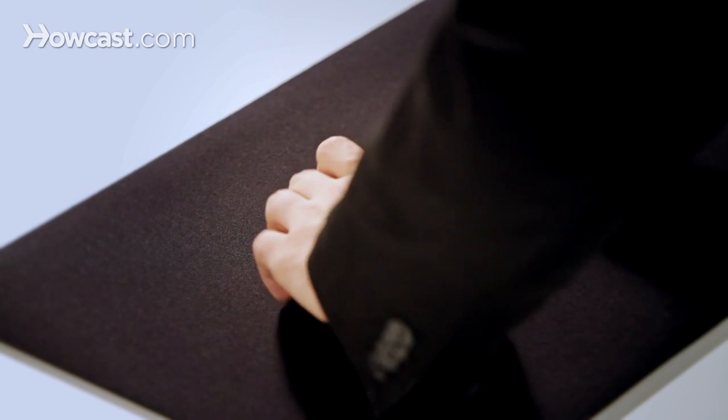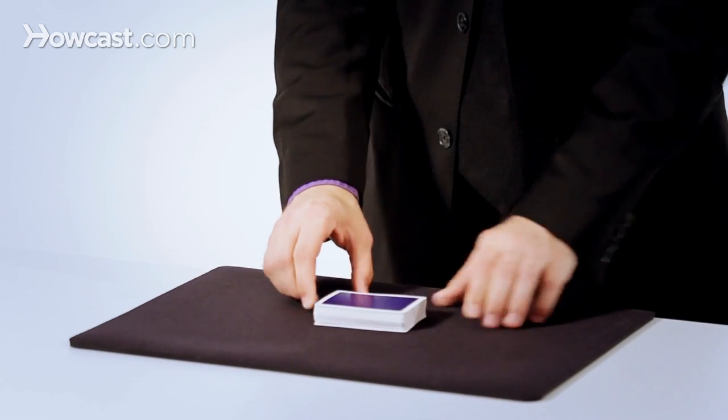Hi, I'm Mike Patrick, and this is how to do a tabled riffle shuffle. This is the type of shuffle that they do in casinos. It looks like this. You take the cards, give them a shuffle, and push them flush.